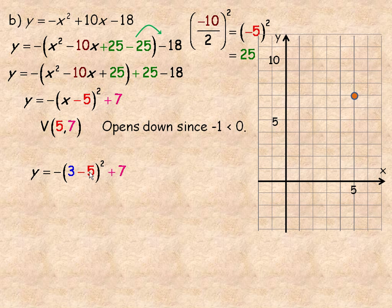Now 3 minus 5 is negative 2, and negative 2 squared is 4. So this negative comes from here, so we have negative 4 plus 7, which of course is 3. So I put 3 in place of x, and I've got a y value of 3. So that tells me the point (3, 3) is on the parabola. So plotting 3, 3, that would be the point right here.